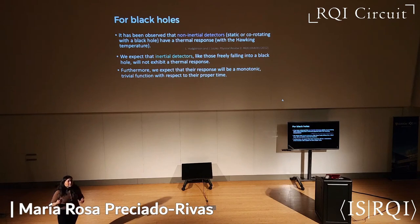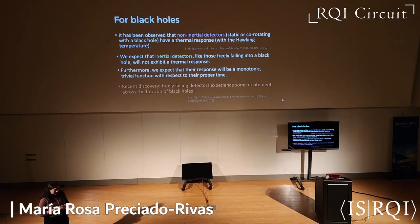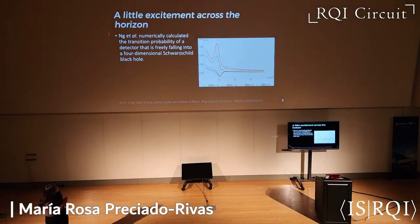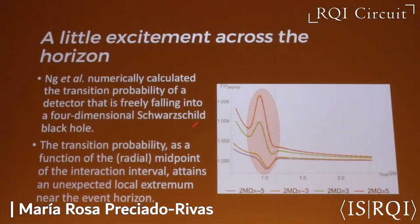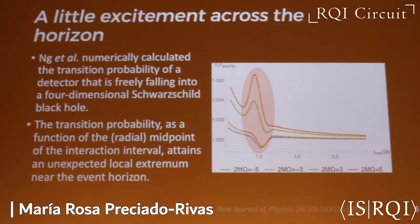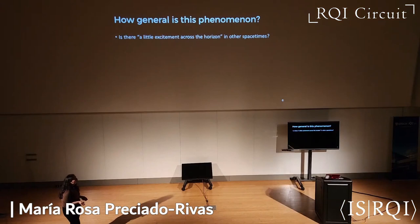We expect that inertial detectors, like those that are freely falling into a black hole, will not show this thermal response, and furthermore, that this response will be some monotonic, maybe trivial function that will depend on their proper time. However, it was recently discovered that freely falling detectors into a black hole can show some excitation across the horizon. I am referring to work in which they numerically calculated the transition probability for a detector falling into a four-dimensional Schwarzschild black hole. They found that the transition probability as a function of the radial midpoint of the interaction interval has a local maximum and local minimum near the event horizon.